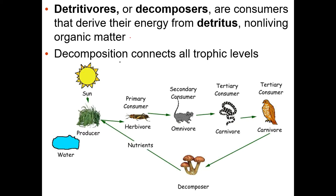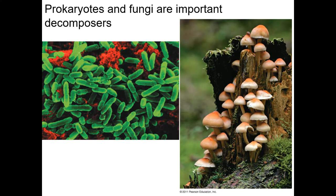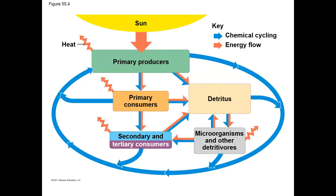Make sure you understand decomposers and detritivores — they take dead or non-living organic matter and break it down so nutrients from all organisms can eventually be absorbed by producers again. Prokaryotes (bacteria and archaea) and fungi are really important decomposers. To summarize: chemicals — carbon, hydrogen, oxygen — cycle with no beginning or end, going around and around, whereas energy flow starts with the sun and ends as heat that's not destroyed but no longer usable.